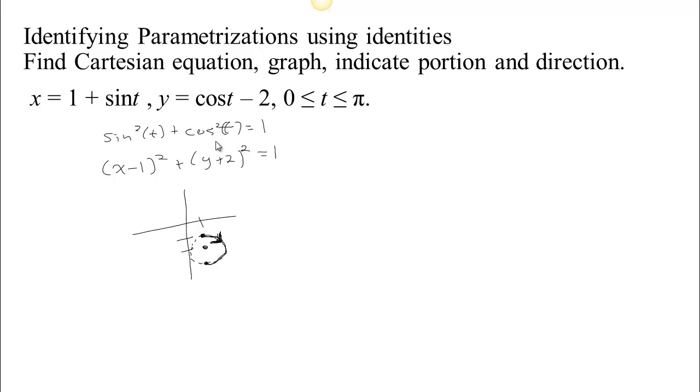So now we have the Cartesian equation. There's the relationship between X and Y, which we identify as a circle. We've got the graph. The graph of the Cartesian equation is the full circle, but for our particular bounds on t, we just start here and move around the right-hand half of the circle.